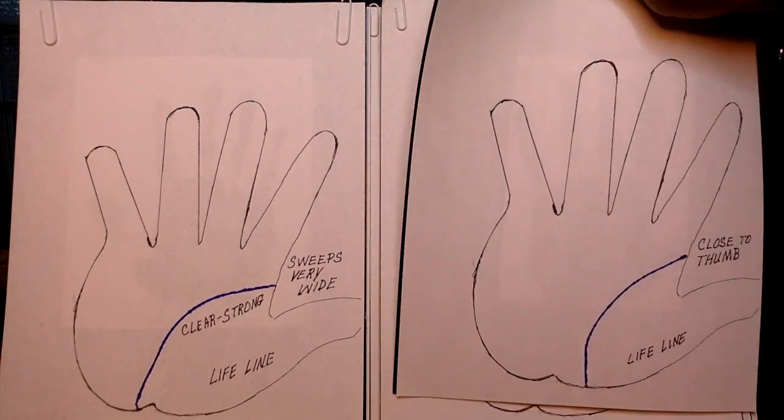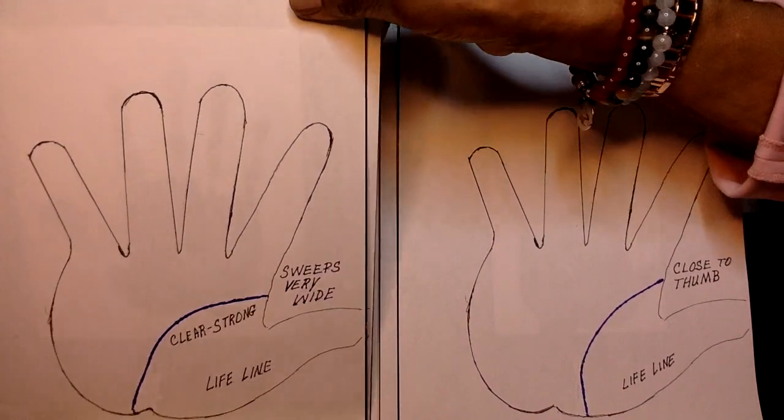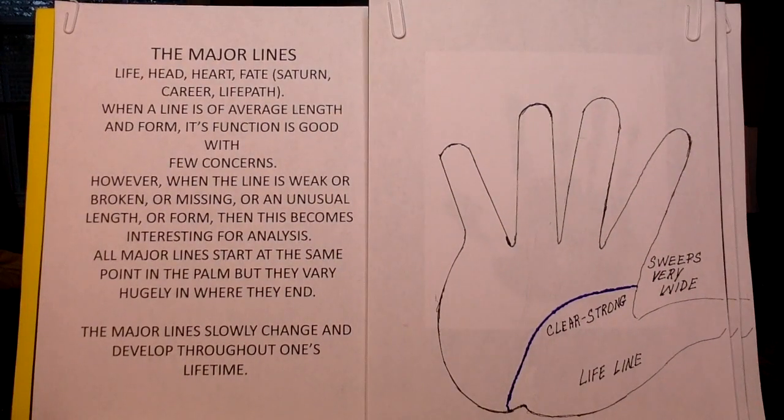So it depends on what the person is doing with their life because you're in control. Believe me, you can make the change. Just check your diet. Make sure you have a rigid physical routine of exercise, your diet, and you're sleeping well. This will strengthen a poor lifeline or something you're not satisfied with in a matter of months. So things change. That's why they're major lines. That's how they operate. Okay.